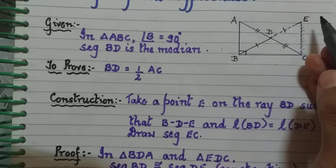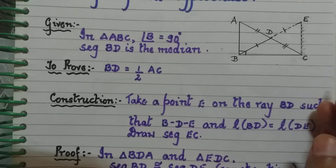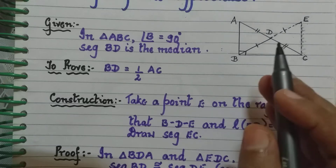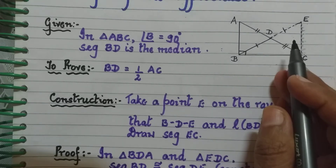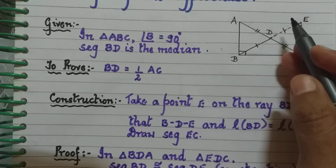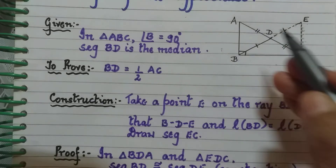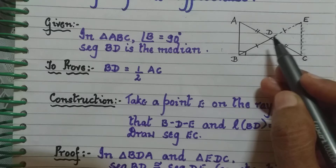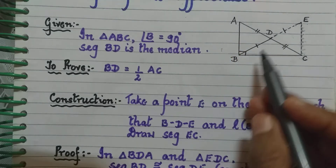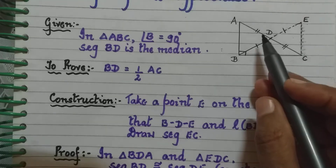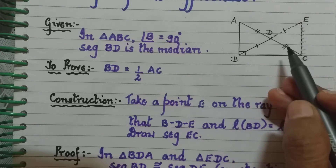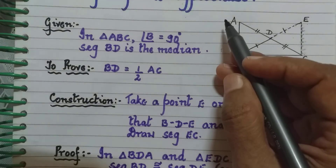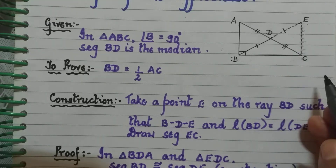In triangle BDA and triangle EDC, we are trying to prove that these two triangles are congruent. We have one pair of sides congruent and one more pair of sides congruent. We also have angles ADB and EDC, which are vertically opposite to each other and therefore congruent. So triangle BDA is congruent to triangle EDC.